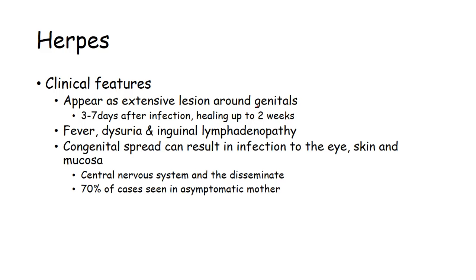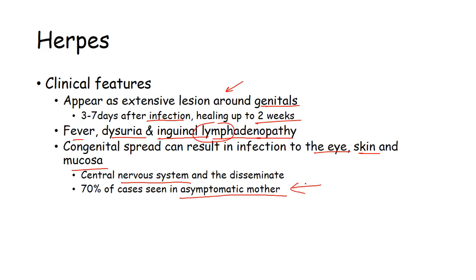Clinical features of herpes appear as extensive lesions around the genitals — 3 to 7 days after infection — with less discharge but visible lesions. Healing time can take up to two weeks. It is associated with fever, dysuria, and inguinal lymphadenopathy. Congenital spread can result in infection to the eye, skin, and mucosa of the newborn. The central nervous system can be affected, with 70% of cases seen in asymptomatic mothers.